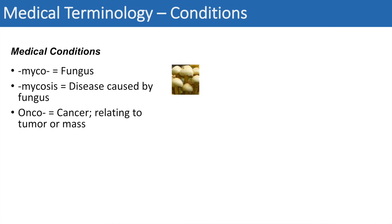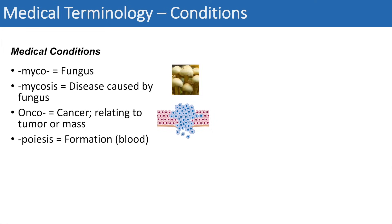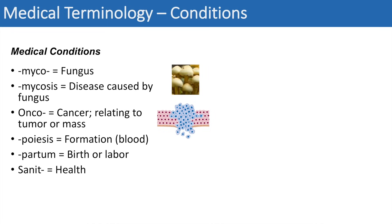The next one is onco, which simply means cancer or relating to a tumor or mass — you can think of an oncologist or oncology. The next suffix is -poiesis, which simply means formation — we typically think of this with the formation of blood, such as hematopoiesis or thrombopoiesis. The next one is partum, which means birth or labor — think of prepartum or postpartum, meaning after birth. And sanit simply means health — you can think of sanitation or sanitary.